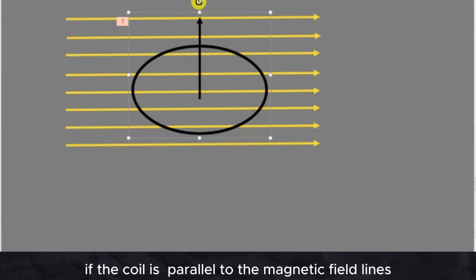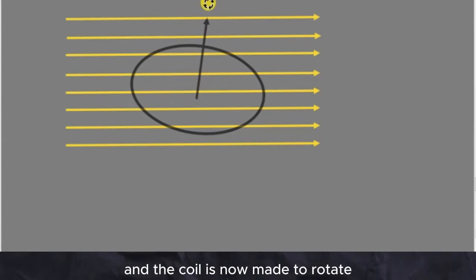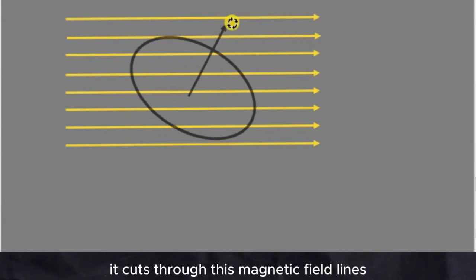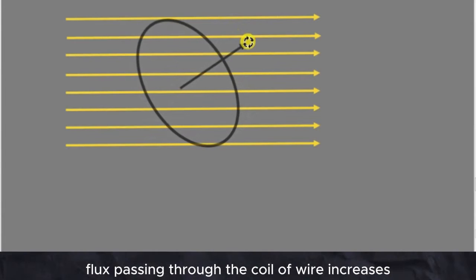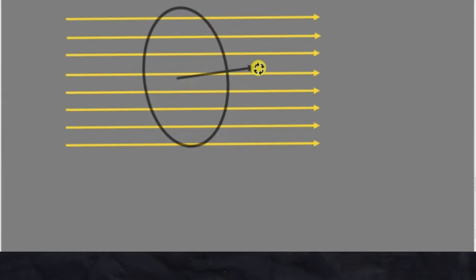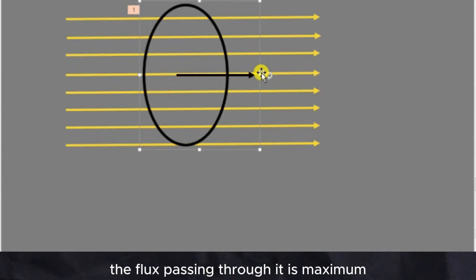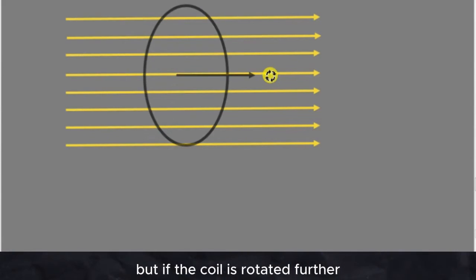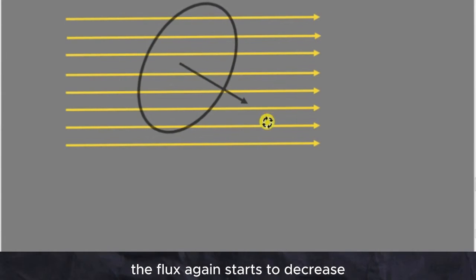That means if the coil rotates through a magnetic field, the angle between the area vector and the magnetic field lines changes, and hence the magnetic flux through the coil changes. So if the coil is parallel to the magnetic field lines, the flux passing through it is zero. As the coil is made to rotate, it cuts through the magnetic field lines, and the magnetic flux passing through the coil increases. When it reaches a vertical position, the flux passing through it is maximum. But if the coil is rotated further, the flux again starts to decrease.